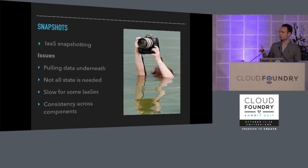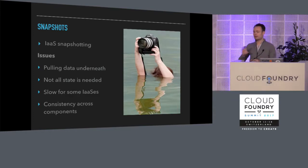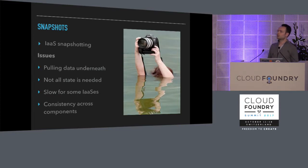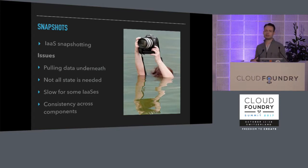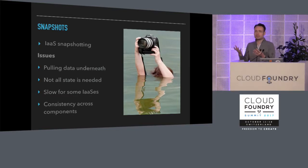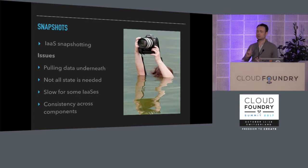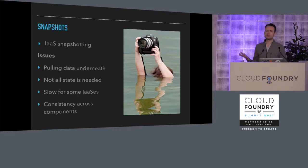We also looked at snapshotting — IaaS-level snapshots where you can just ask your IaaS to take a backup of a disk. It's quite nice because the VM itself doesn't know anything about it, so it just happens out of band. But that's also a weakness, because if the VM doesn't know a snapshot's being taken, data might not be flushed to disk. So you have a Redis VM with lots of stuff happening in RAM, you take a snapshot — you effectively pull the disk out from underneath the VM, and all that data in RAM hasn't been saved. Also, you don't need all that state. If I'm backing up a Redis machine, I want the Redis RDB file — I don't want Redis itself, all the logs, the whole OS. It's also very slow for some IaaSs, and you still have problems with consistency.